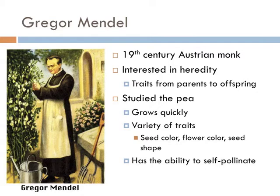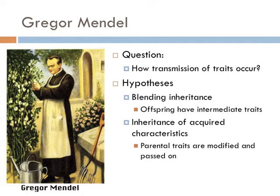Another reason that Mendel chose the pea is that it grows very quickly, so you can get several generations in a short amount of time. Also, the plant has the ability to self-pollinate, and this is important to get a pure trait to be expressed. Like any good scientific process, Gregor Mendel had a specific question that he was trying to address: how are physical traits passed from parents to offspring?